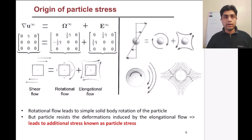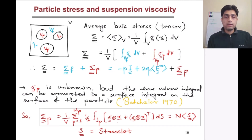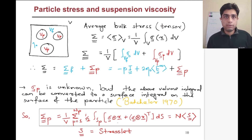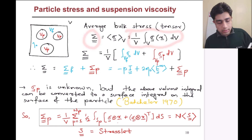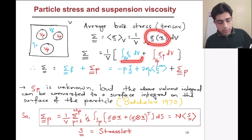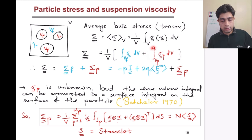Because of the rigidity of the particle there are extra stresses — those stresses are known as particle stress — and because of that you have a higher viscosity when particles are suspended in a fluid. To quantify the viscosity of a suspension we need to quantify the stress first. The stress can be written as a volume integral of stress over the entire domain, which splits into two parts: the part coming from the fluid (hydrodynamic pressure plus eta times the deformation tensor) and the part coming from the particles, known as the particle stress.